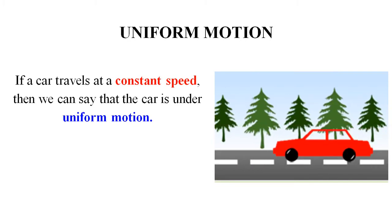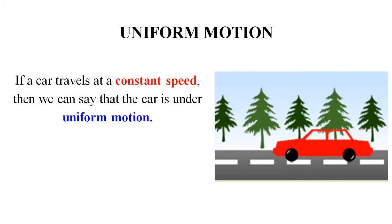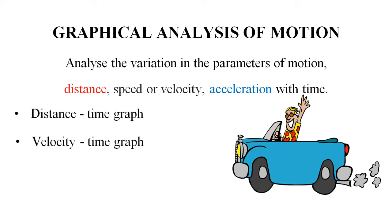If the body is not maintaining constant speed throughout its journey, then we say that the vehicle is under non-uniform motion. Moving to graphical analysis, we analyze the graphs of various parameters of motion — in particular the distance-time graph, velocity-time graph, and acceleration-time graph.